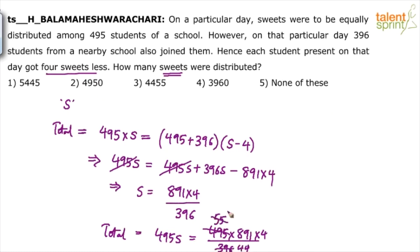So again, this simplifies to 5 times 891. That gives 4000 plus 450 plus 5, which is 4455. So the total number of suites distributed is 4455.